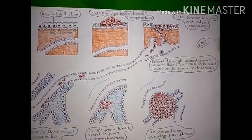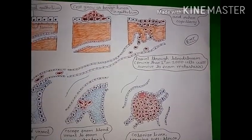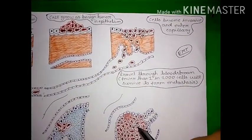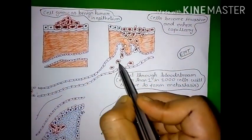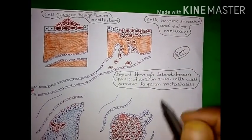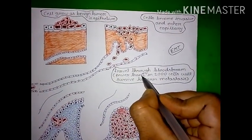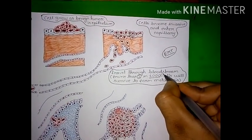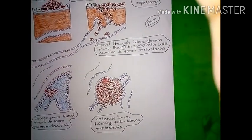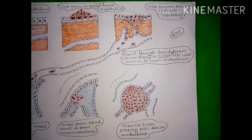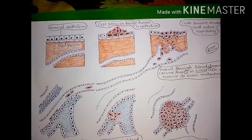Metastatic cells need a favorable microenvironment to succeed. Traveling through the bloodstream, fewer than one in one thousand — or even one in one million — cells will survive to form metastasis, because they cannot survive in unfavorable conditions. They need a favorable environment to form a large-size tumor. This is the complete process of metastasis.